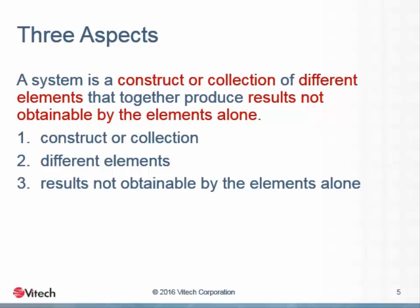The second aspect calls for a construct or collection, implying that there is some structure to the system that holds the elements in relationship to each other. This structure may have been designed into the system through a known process, or might simply be found in the system in nature. In most cases we will deal with systems which have been intentionally designed by human designers. The structure gets its shape from the ways the elements are linked together — we call these linkages relationships.